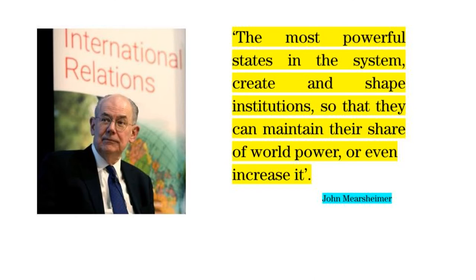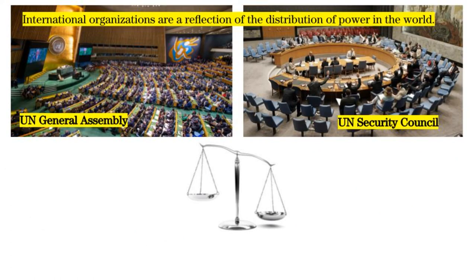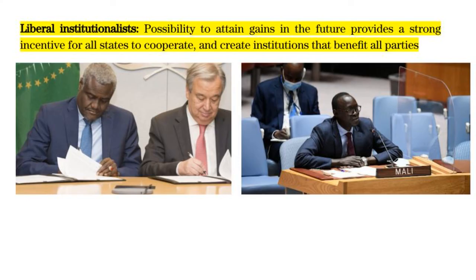According to a leading American realist, the most powerful states in the system create and shape institutions so that they can maintain their share of world power, or even increase it. Realism also focuses on the extent to which powerful states dominate institutions. They argue that latecomers or less powerful members will have less control over institutional decisions and outcomes, benefit less from their creation, and will have less commitment to maintaining the institution. Realists maintain that institutions are basically a reflection of the distribution of power in the world, based on the self-interested calculations of the great powers. Liberal institutionalists argue, on the contrary, that the shadow of the future, or the possibility to attain gains in the future, provides a strong incentive for all states to cooperate and create institutions that benefit all parties.